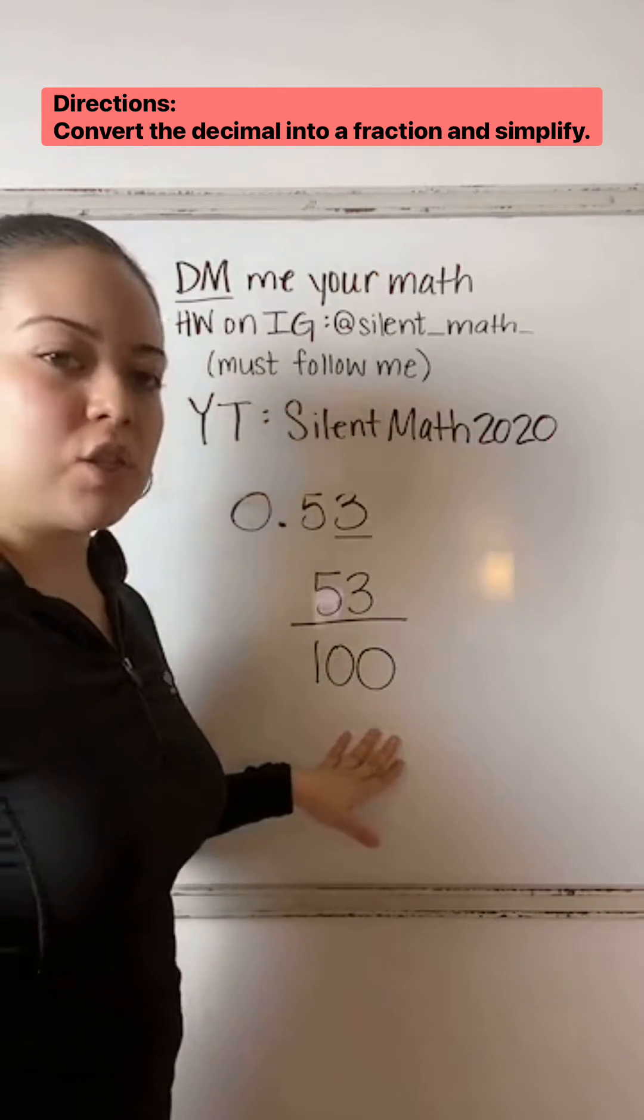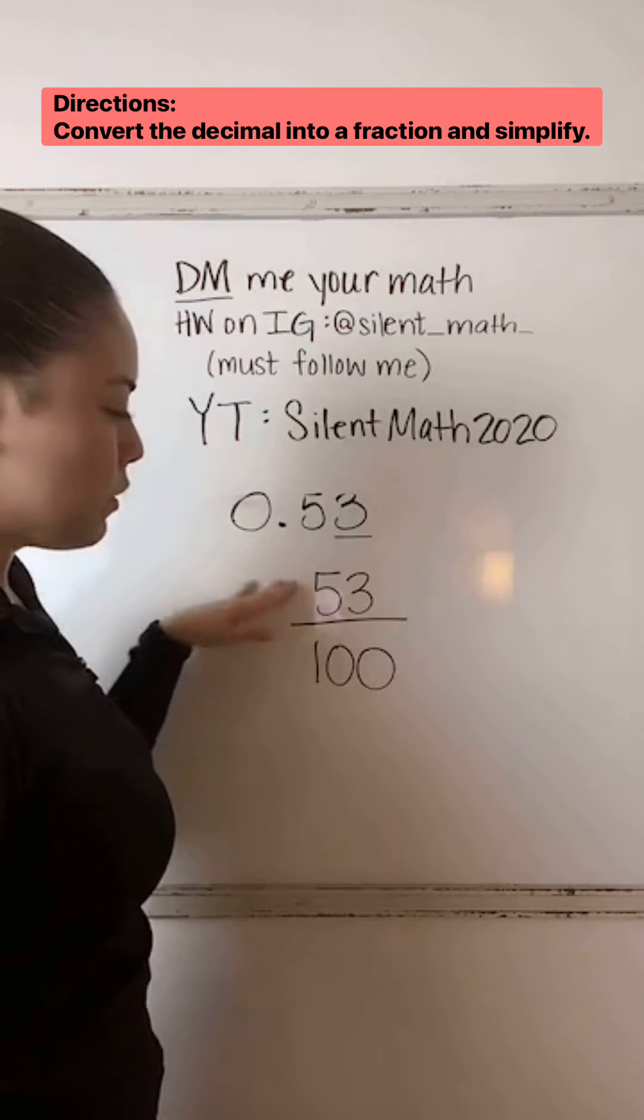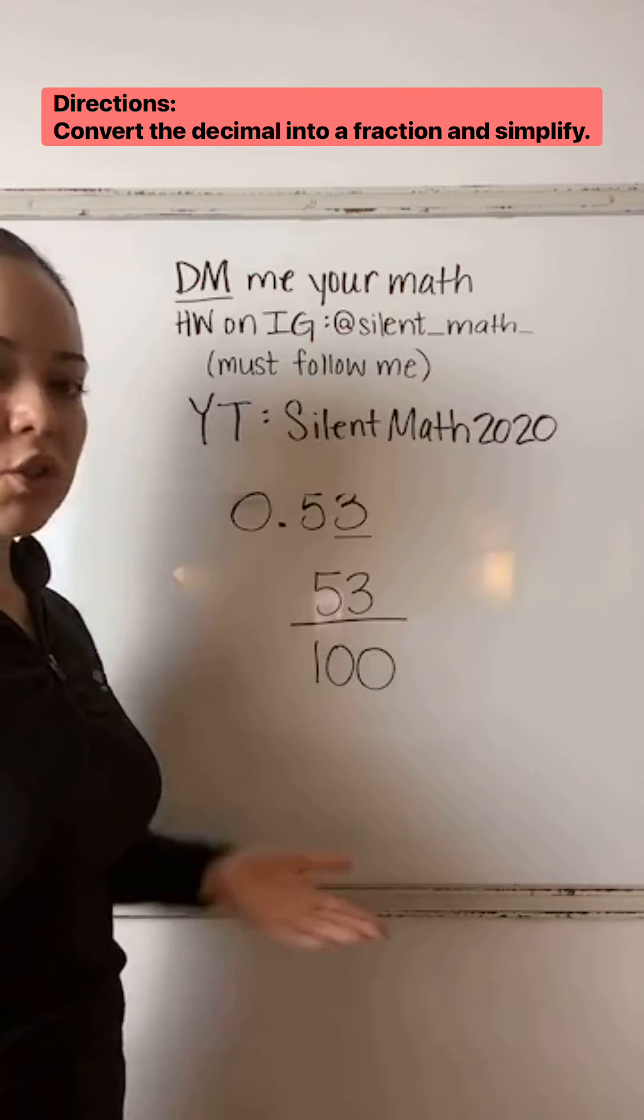And with all fractions, you need to simplify. But 53, there's no common factor between 53 and 100. So we would just leave it as this.